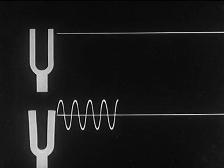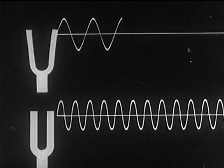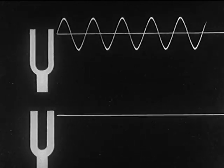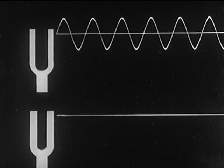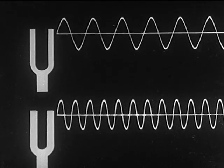Here, the lower fork makes fewer complete vibrations per second. Therefore, its frequency is greater. It is evident that the one with the greater frequency has the higher pitch.